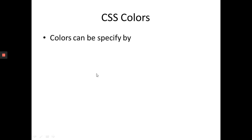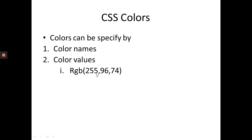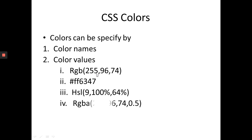Colors in CSS can be specified in several ways. You can use color names directly, or specify color values using RGB, RGBA, HSL, HSLA, or hex values. RGB stands for Red, Green, Blue.